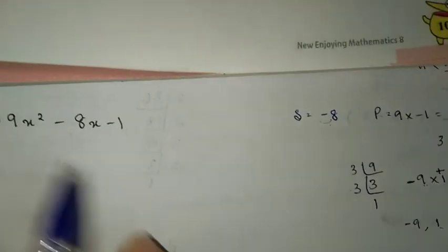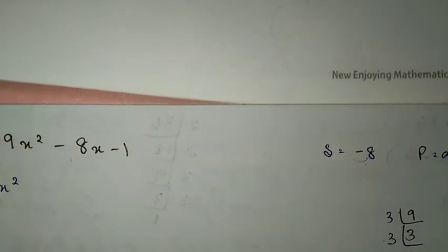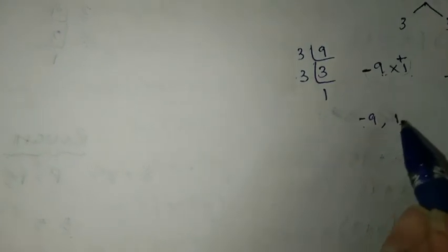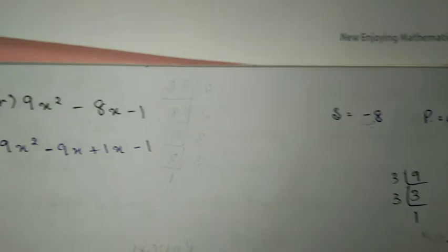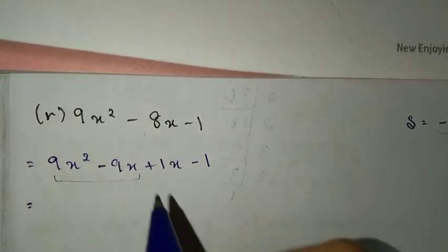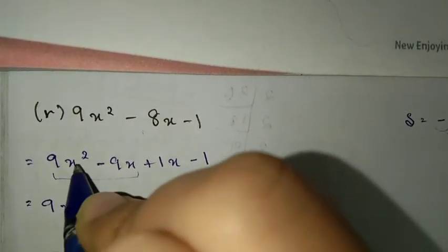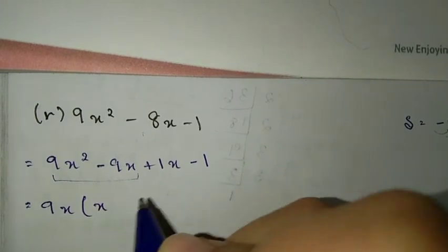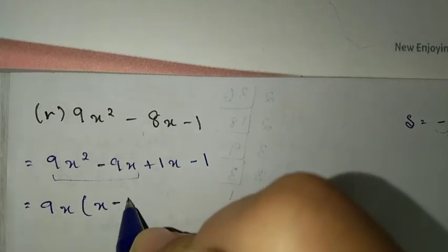Now let's substitute instead of the middle term. 9x² minus 9x plus 1x minus 1. From the first two terms, we're going to take out common. 9 is common in both. X² is common, so x² comes out.